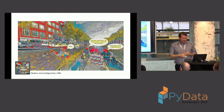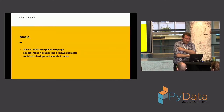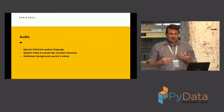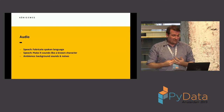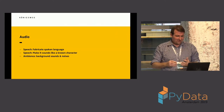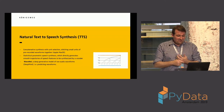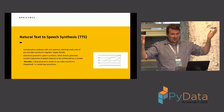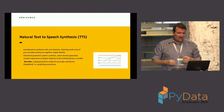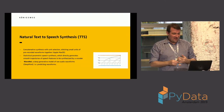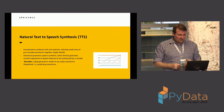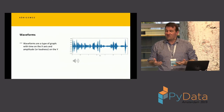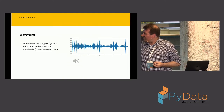Now let's go to the audio part. The task is to fabricate spoken language, make it sound like a known character, and create sounds and noises. We're going to focus on the first part: natural text to speech. There are multiple approaches: concatenating sounds, WaveNet, and different others. First I want to give a little introduction to the sound space. There are waveforms — probably the most common representation of audio.